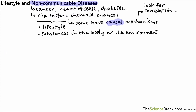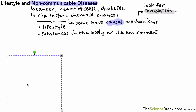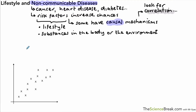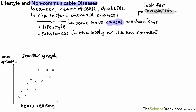Let's look at a scatter graph. We have one factor along the x-axis and another factor on the y-axis. For example, we could have hours of revision versus average exam grade. Between those two, we have a positive correlation — the more hours spent revising, the higher the average grade. We can draw a line of best fit and call it a positive correlation.